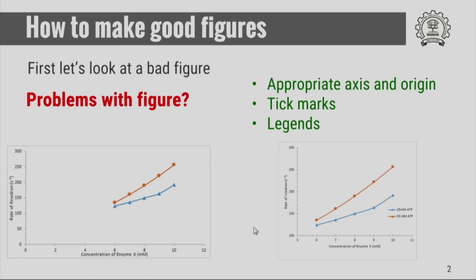The second problem is that there are not enough tick marks. Therefore, it is very hard to find out the values corresponding to each data point from the plot.